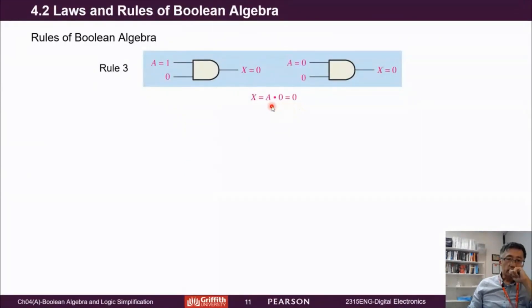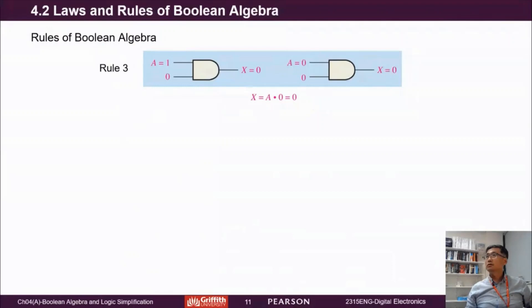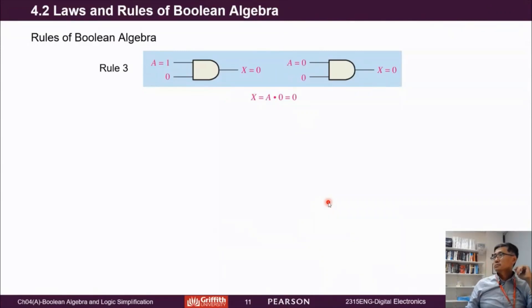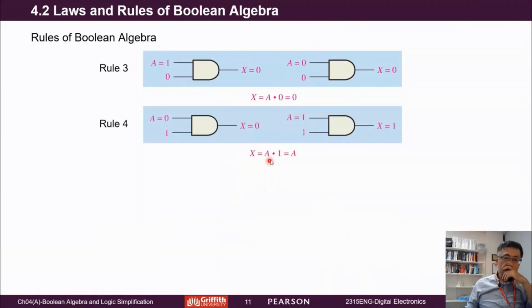Rule number three: A times zero equals zero. Same as elementary algebra. Testing both possibilities — whether A is one or zero — the output will always be zero. Rule number four: A times one equals A. If A is zero, output is zero; if A is one, one times one is one. The input variable's value is directly transferred to the output, so output equals A.